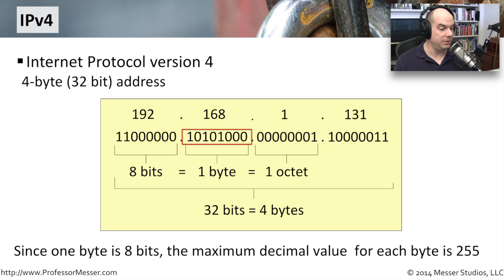168 is 10101000. So if you put all those together, it comes out to be 168 when converting between binary and decimal.